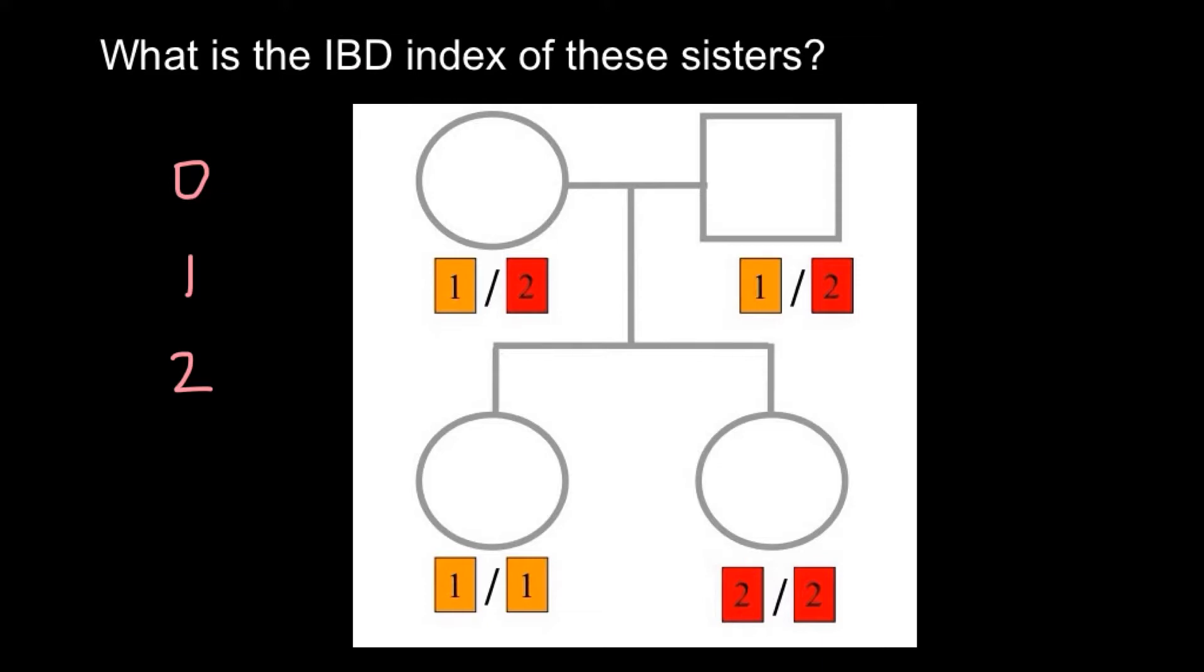It is obvious that we got those A1 alleles identical by state, not by descent, because you and I do not have common ancestors. But because these two sisters have common ancestors - the mother and father are the same for both - we measure the identical by descent index here.